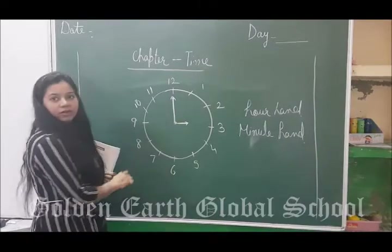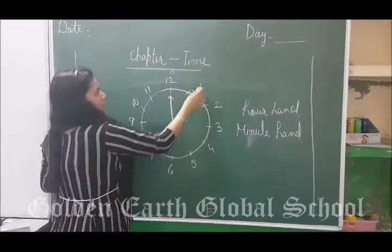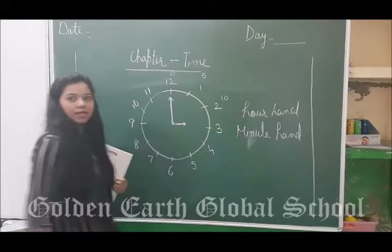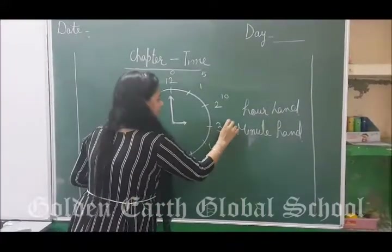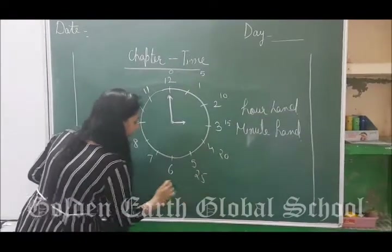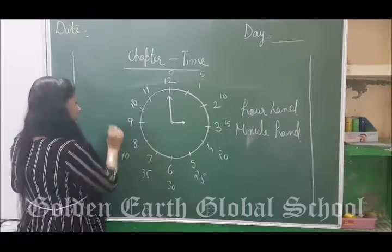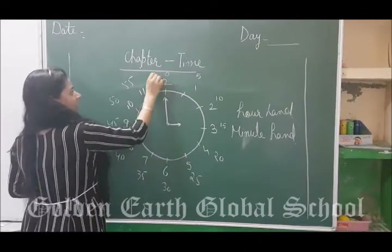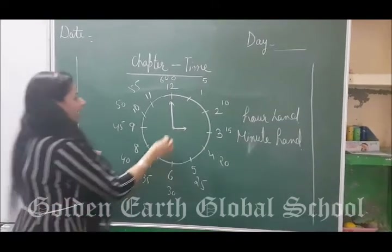Reading minutes depends upon the table of 5. Five ones are 5, five twos are 10, five threes are 15, five fours are 20, 25, 30, 35, 40, 45, five tens are 50, 55, and five twelves are 60. This is the 5 times table.